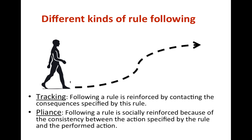Another way of following rules is called compliance, which is when following a rule is socially reinforced because of the consistency between the action specified by the rule and the performed action. In simpler terms, we follow a rule because doing so is socially reinforced, regardless of the correspondence between what the rule says and our experience. It doesn't matter if the rule gives good or bad advice — what matters is to follow the rule, period. For example, some people follow recipes regardless of the consequences because they trust the recipe makers 100%. Even when they see something weird in the proportions, they still follow the rule, which often leads them to make dishes that are not very good.